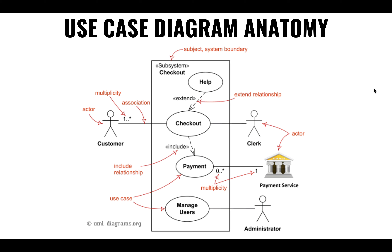Some use cases include a relationship that specifies some other use case that needs to have occurred before we can do a checkout. For instance, we cannot do the checkout until we have payment from the financial institution. Some use cases might be shared amongst different actors — the clerk and the customer both use checkout — whereas some use cases might be specific to one actor, like the administrator. There's a boundary around the system that tells us exactly what we're building and what we're not. It needs to be very clear what we're responsible for.